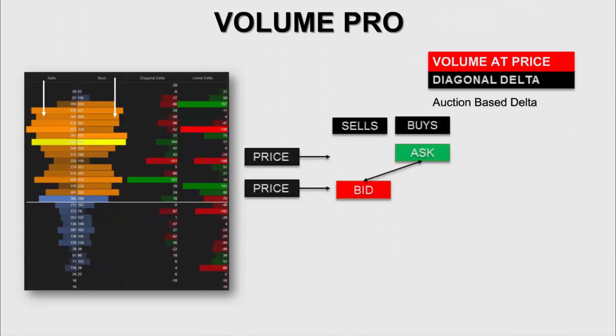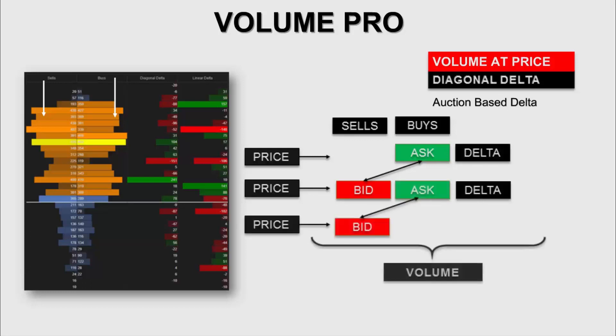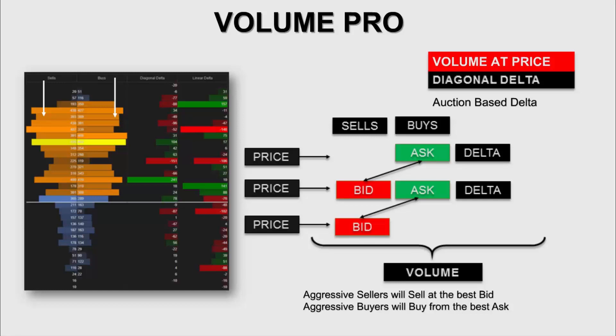Diagonal delta is more of an auction-based delta. If the market is in a dual auction, then there isn't only one price — there are two prices. And there are interactions between market participants. The diagonal delta allows you to see this interaction. The diagonal delta puts weight not on the price, but on the interaction.